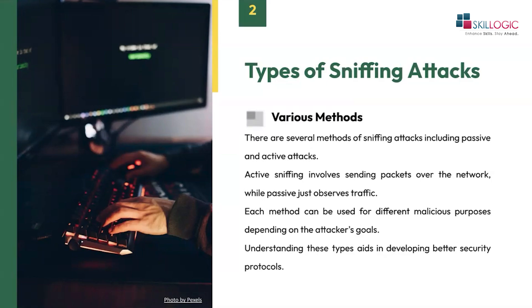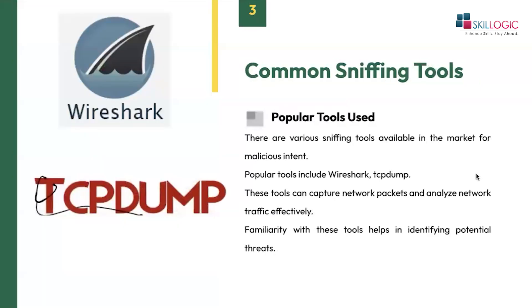Then comes active sniffing. In active sniffing, when we are actively present inside the network, we use something called an address memory or CAM table which sends legitimate traffic to other ports. The hacker can watch the switch traffic and can also actively perform DNS poisoning, MAC flooding, or MAC spoofing attacks.